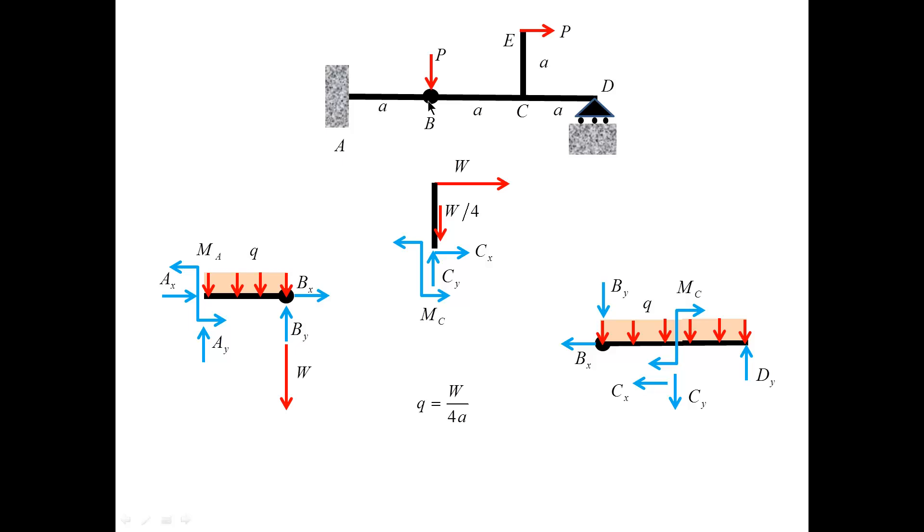Finally, I will draw the free body diagram for the segment B, C, D. Here, I inherit the forces BX and BY from the left free body diagram. I inherit the moment and forces at C. And of course, all of the choices are dictated by Newton's third law. And finally, I have the reaction at the roller D. And again, I have a distributed load Q, with the magnitude W over 4A.